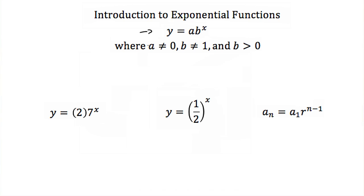Now there are some important rules to notice. First, a cannot equal zero. If it did, we'd have y equal to zero times b to the x. It doesn't matter what b is or what x is — it's multiplied by zero, so this would just be y equal to zero, and that's not an exponential function.